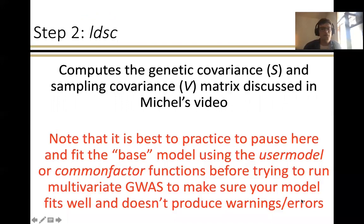The next step is to run LD score regression, which computes the genetic covariance and sampling covariance matrix. The level of genetic overlap across these different traits is estimated using LD score regression, along with the standard errors and dependencies across those estimates — as will be the case when there is sample overlap. This sampling covariance matrix is what allows GenomicSEM to produce accurate estimates even in the face of unknown levels of sample overlap across traits.